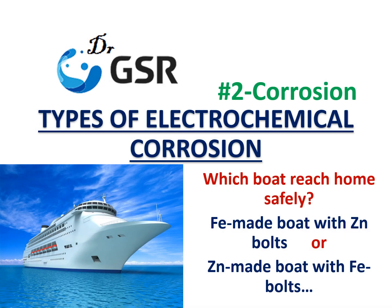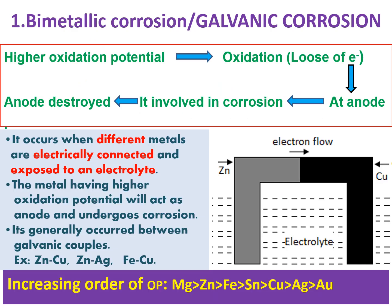Welcome to my channel. This is the second video on types of electrochemical corrosion. My first video about the introduction to corrosion and theories of corrosion explains the mechanisms of corrosion — you can find that video on my channel. I will give the link in the description, so please watch that one for better understanding. So, types of corrosion: there are four types we will discuss.